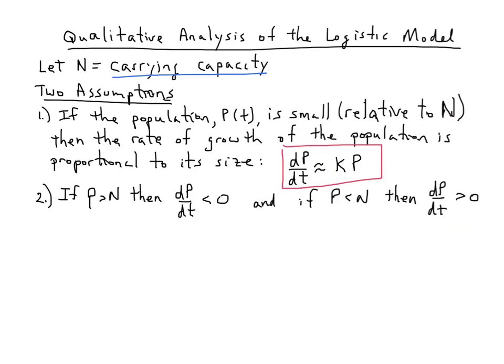Putting these two assumptions together, we have what is known as the logistic equation. It has this form: dP/dt = kP(1 - P/N). It takes a little while to start to feel comfortable with the logistic equation or model.